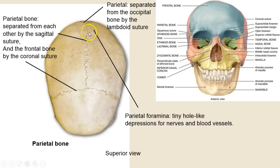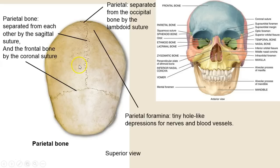Here's the superior view — we're looking down on the skull. There's the sagittal suture, and there's the coronal suture — think of 'crown' for that one. The coronal separates the two parietal bones from the frontal bone. The occipital is in the back, and 'foramina' is just the plural of 'foramen.'